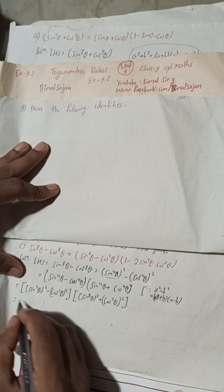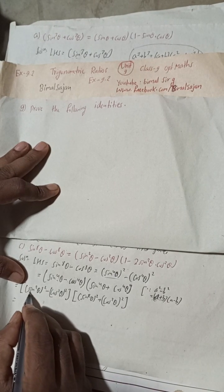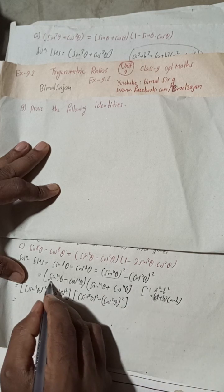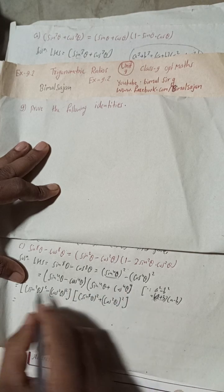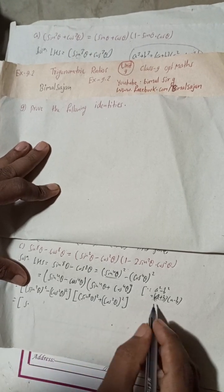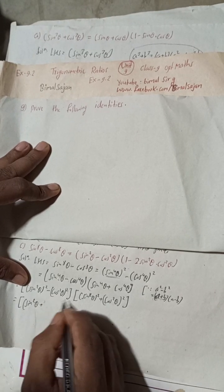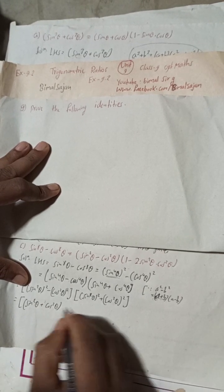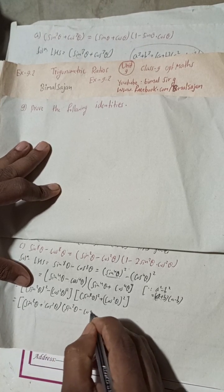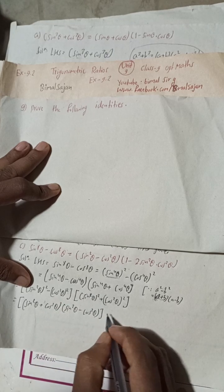We can apply the same a² - b² formula again. Now in place of a there is sin²θ and in place of b there is cos²θ. So (a + b) means (sin²θ + cos²θ), and (a - b) means (sin²θ - cos²θ).